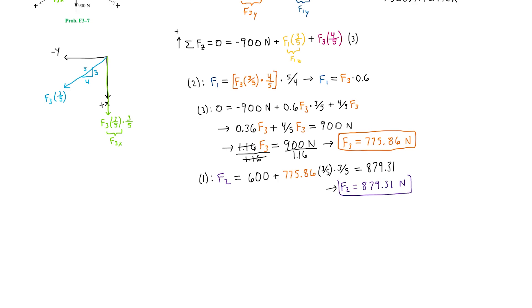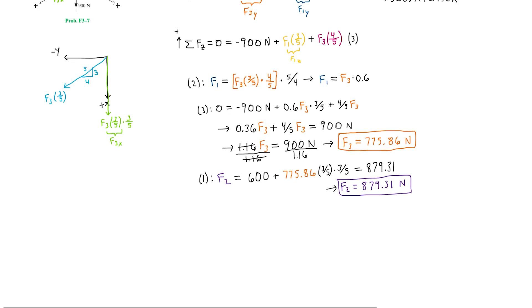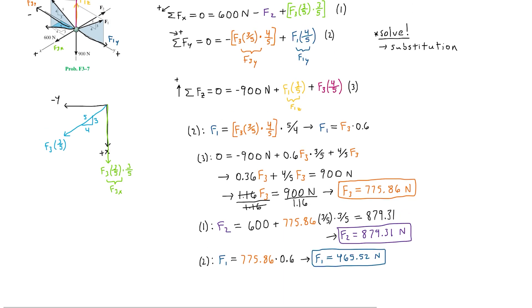And finally we can solve for F1 substituting in our F3 value into this simple equation. So from equation two we have F1 is equal to 775.86 times 0.6. So hence the force F1 is equal to 465.52 newtons. So we have now found the magnitudes of all three forces.